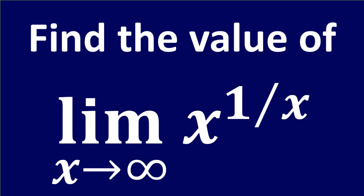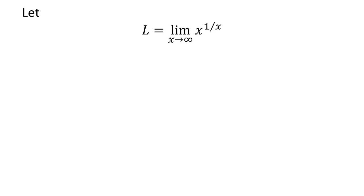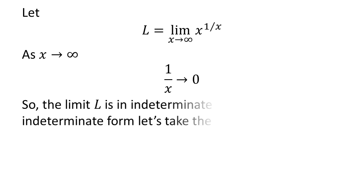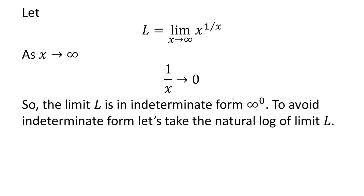In this video, we will learn to find the limit of x raised to the power of 1 upon x as x approaches infinity. Let us assume L is the limit of x raised to the power of 1 upon x as x approaches infinity. As x approaches infinity, 1 upon x approaches 0, so the limit L is in indeterminate form.